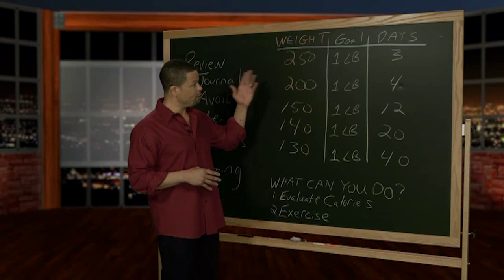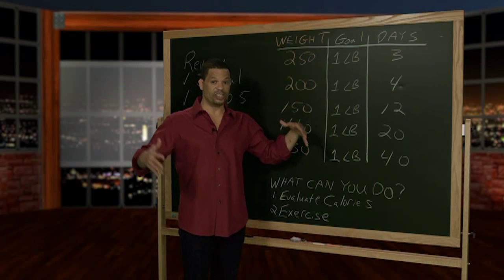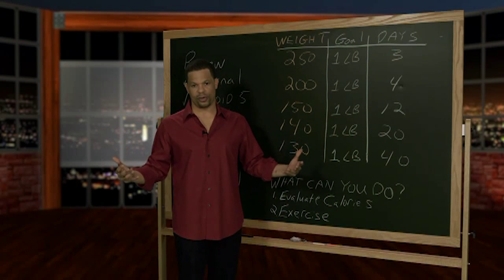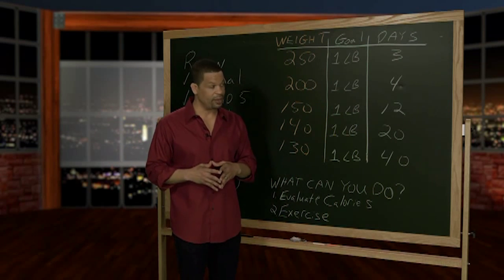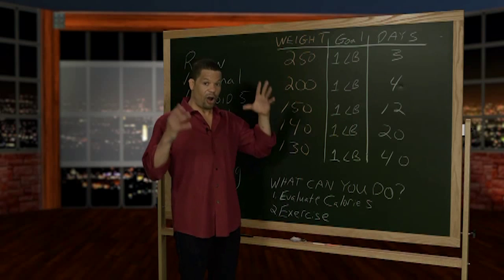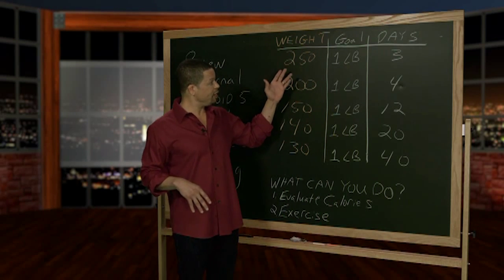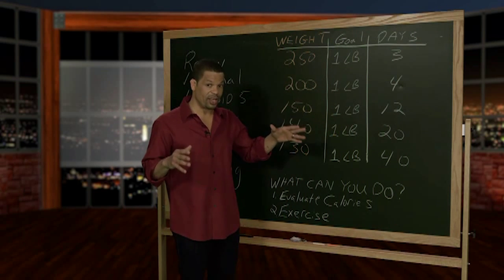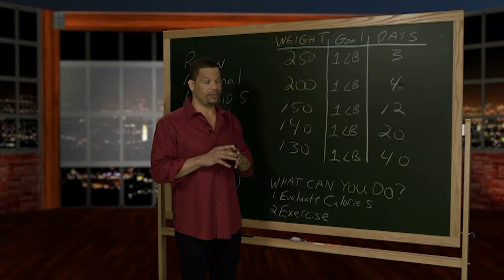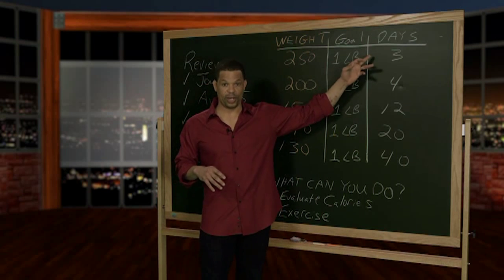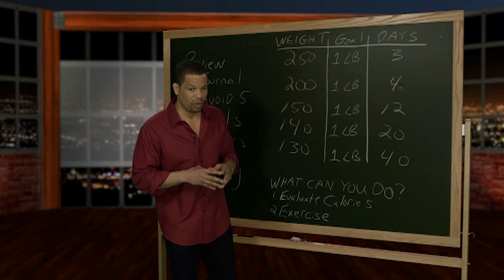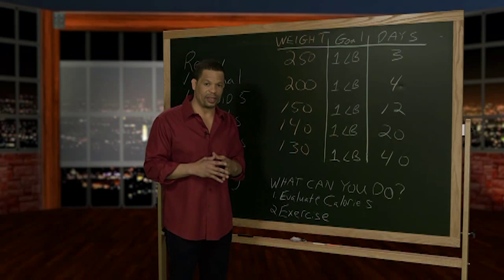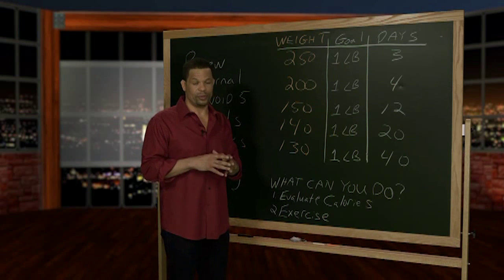The first woman we look at is 250 pounds. Because she's heavier, she's more likely to have more lean muscle tissue and probably burns more calories than someone that weighs 130 pounds. How many days would it take a 250 pound woman eating 1,500 calories to lose one pound? On average, three days. So every three days, someone that weighs 250 pounds can wake up expecting to see the scale down at least one pound.